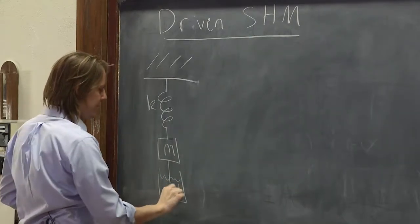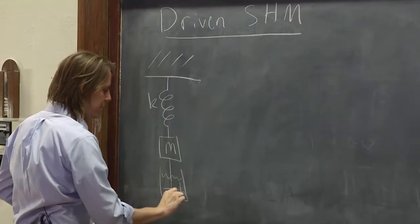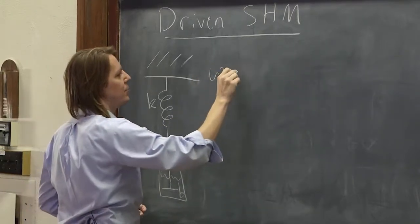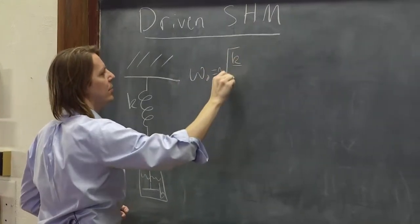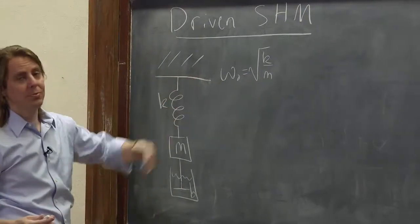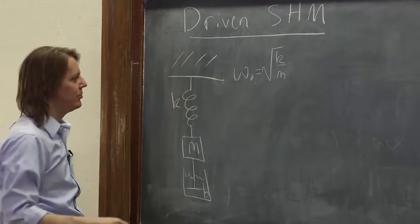So that's b in there. We like to combine these where we have omega naught, the natural frequency, is the square root of k over m. Not necessarily the frequency it's going to move at. The damped oscillator moves slightly slower. That's just a parameter we use to describe the system.